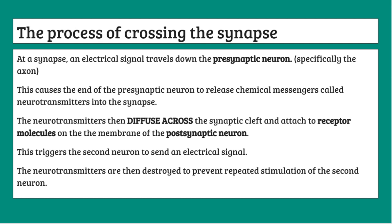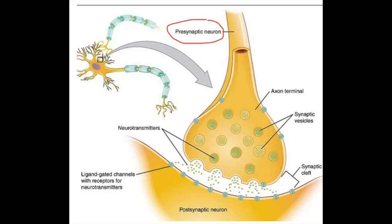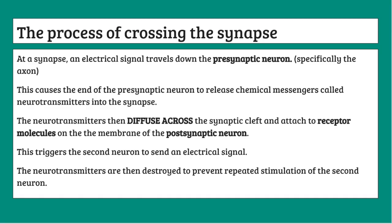Now we can go into the real content of this unit: the process of crossing the synapse. At a synapse, an electrical signal travels down the presynaptic neuron. The presynaptic neuron, as indicated by the name, is before the synapse — it's the first neuron. It's the neuron that first receives the electrical signal and wants to convert it into neurotransmitters so it can reach the other neuron. As you can see in the image, this is the presynaptic neuron, and specifically within it, the electrical signal travels down the axon.